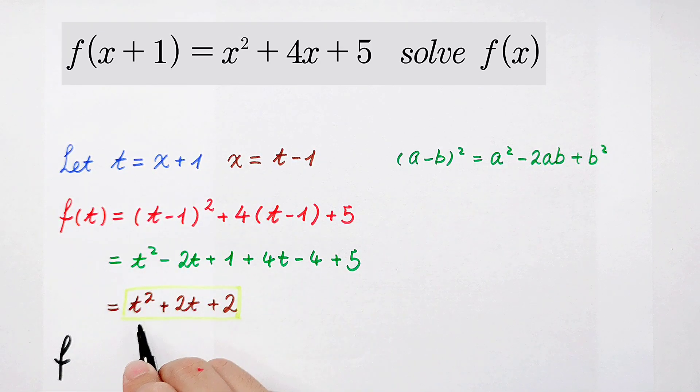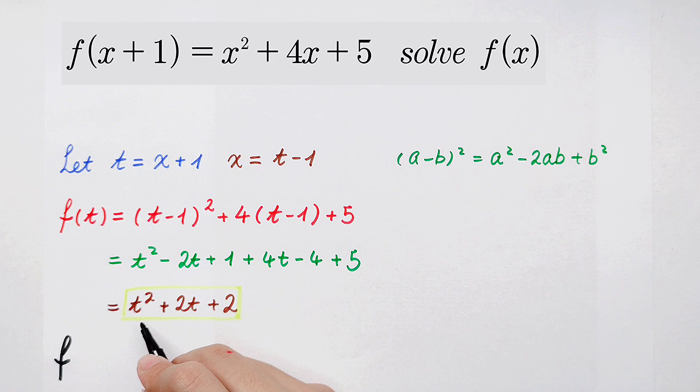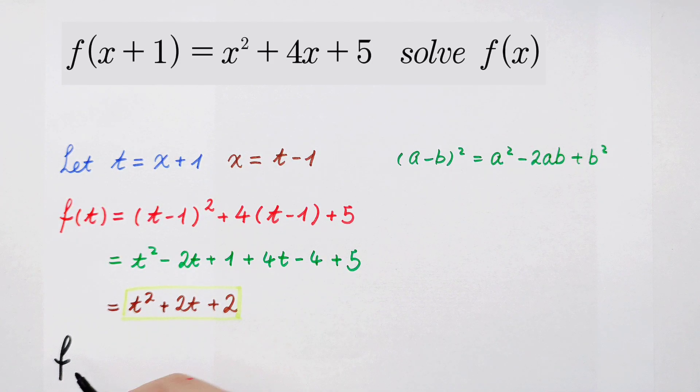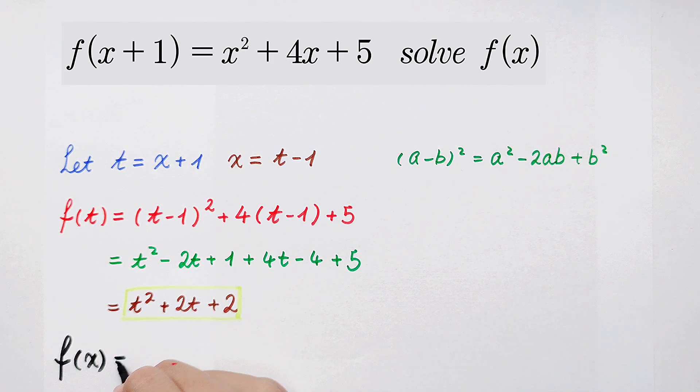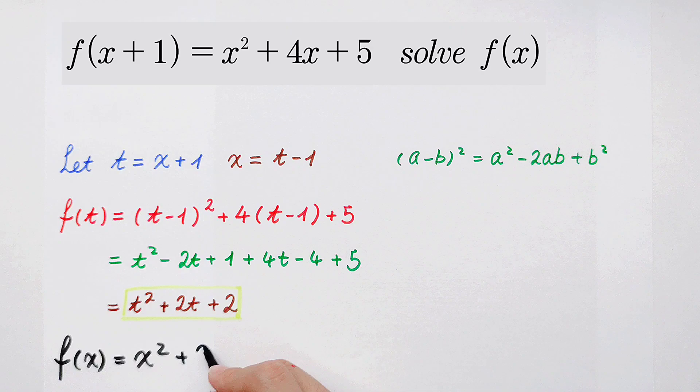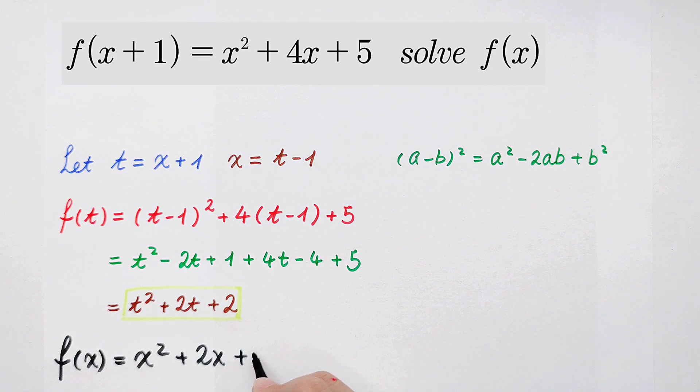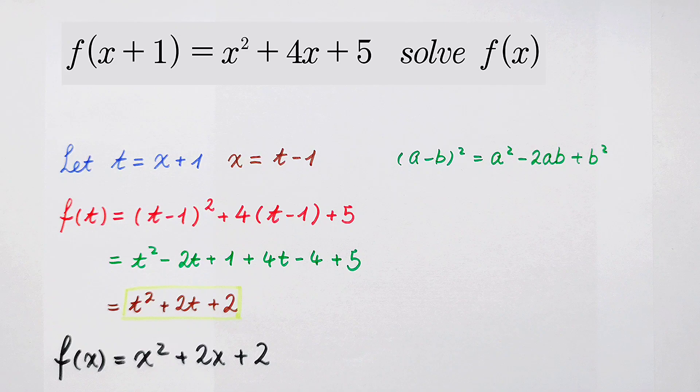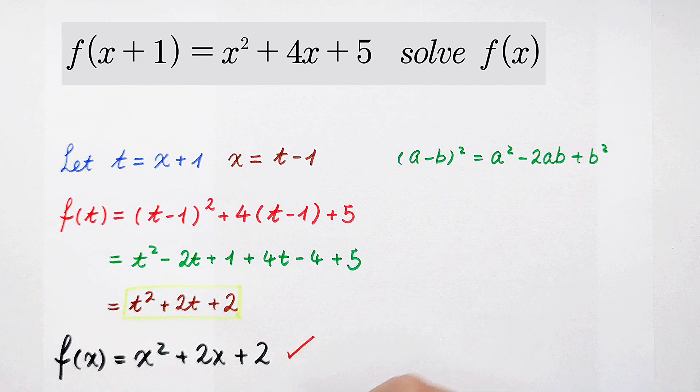Because f of t is t squared plus 2t and then plus 2, so f of x, I just write all of the t as x. That's okay. So it's x squared and then plus 2 times x and then plus 2. So this is our final answer.